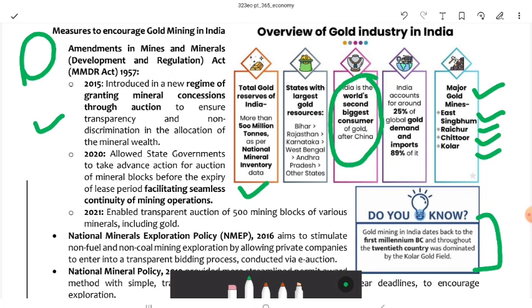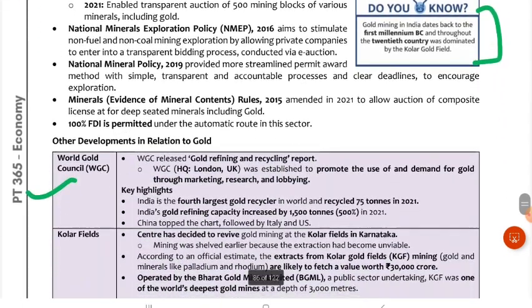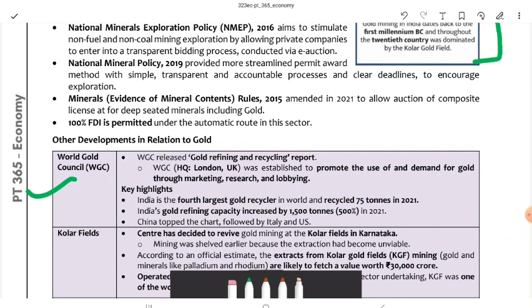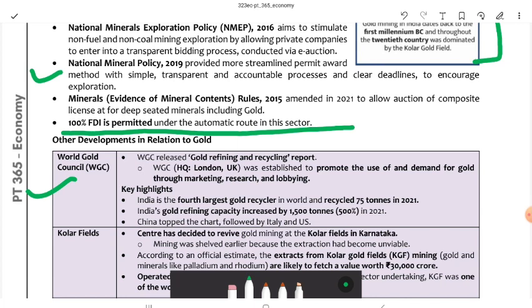Gold mining in India started from the 1st millennium BC, and throughout the 20th century it was dominated by the Kolar Gold Fields. There is also the National Mineral Exploration Policy (NMEP) 2016 for non-fuel, non-coal mining exploration. Private companies can enter through transparent bidding and e-auction. The National Mineral Policy 2019 also permits award methods through simple, transparent, and accountable processes to encourage exploration.